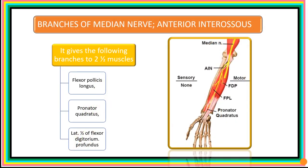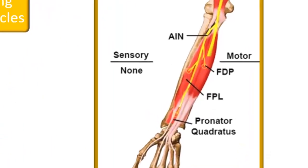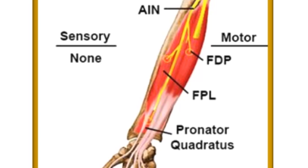The anterior interosseous nerve gives muscular branches to the deep muscles of the anterior compartment of the forearm — two and a half muscles. One is the flexor pollicis longus on the lateral side, and the other is the pronator quadratus at the distal part. The medial half of flexor digitorum profundus is supplied by two nerves: the anterior interosseous nerve on its lateral part and the ulnar nerve at its medial part.